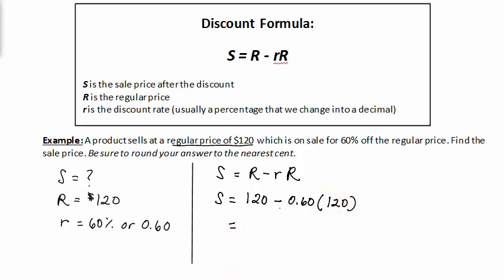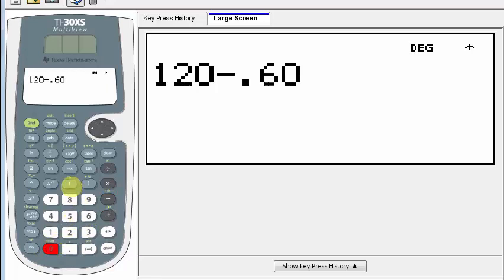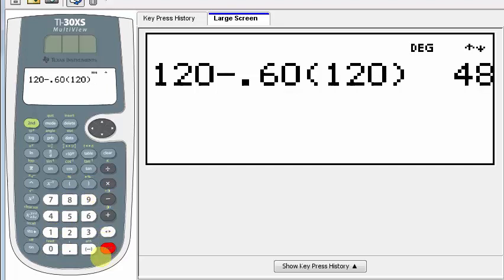This is an easy calculation that we can use our calculator for. So we have $120 minus the rate, 0.60, times the regular price, $120, which equals $48.